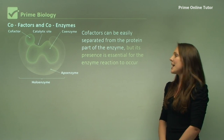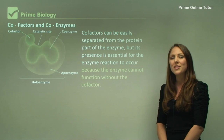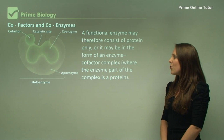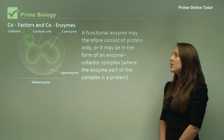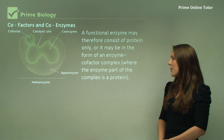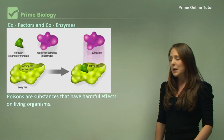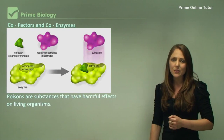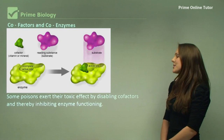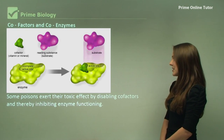Cofactors can be easily separated from the protein part of the enzyme, but their presence is essential for the enzyme reaction to occur because the enzyme cannot function without the cofactor. A functional enzyme may therefore consist of protein only, or it may be in the form of an enzyme-cofactor complex. Poisons are substances that have harmful effects to living organisms and to enzymes. Some poisons exert their toxic effect by disabling cofactors, thereby inhibiting enzyme functioning.